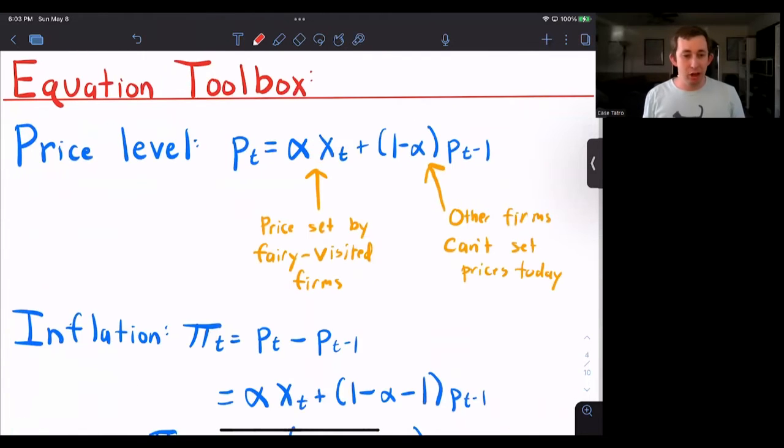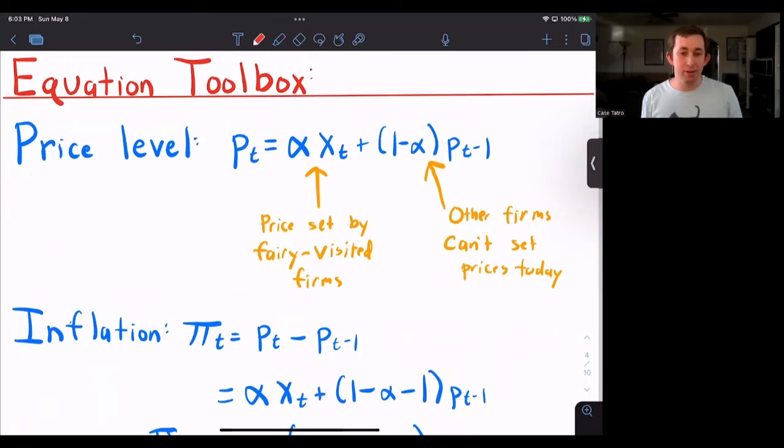So what equations do we have available to us? Well, we have the price level and I know that the price level of this period is a weighted average of the firms that are able to set their price this period and the firms who are not able to set their price this period. So the alpha probability goes to the firms that are setting this period.